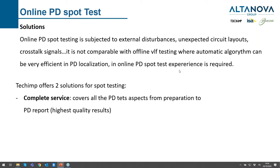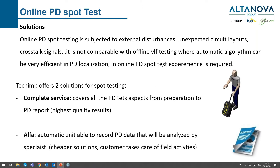We have two different solutions for spot testing. In one case, it's a complete service: we cover all PD aspects from the preparation of the test to the PD report, everything prepared and done by skilled, experienced operators. The second solution is the Alpha unit — a cheaper solution where you buy the Alpha unit, perform the test yourself following its instructions, and the data analysis is then performed by a specialist. It's cheaper, the customer handles field activities, it can be easier for safety, and it's a more flexible solution.